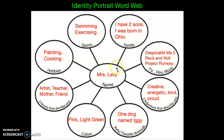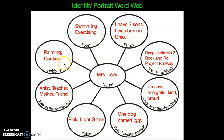We're going to do some brainstorming. In your art kit you have something called a word web. Put your name in the center, and then fill in the different categories. The first one is family — anything you want to say about your family, like siblings or where you were born. Sports — any sports you play or are interested in; if you're not into sports, you can just put 'no sports.' Hobbies are things you like to do in your spare time — I put painting, cooking, and sewing.